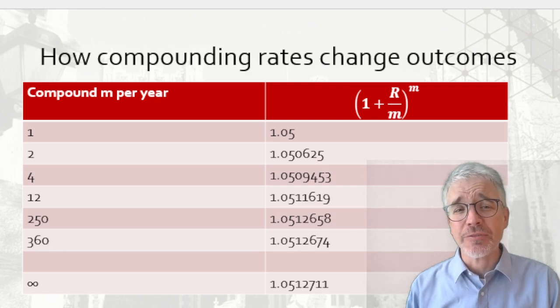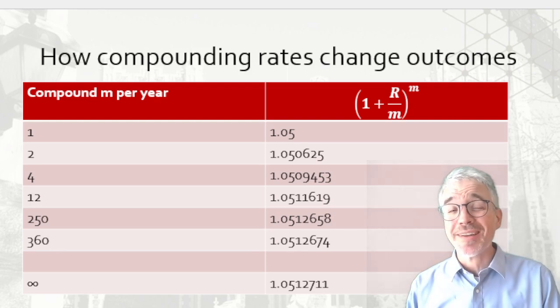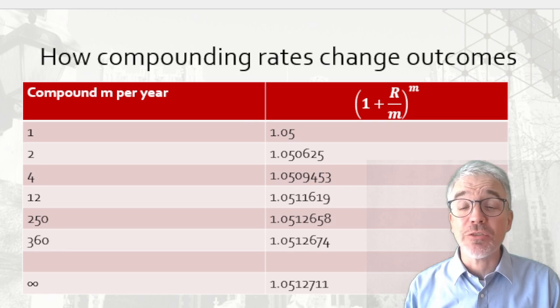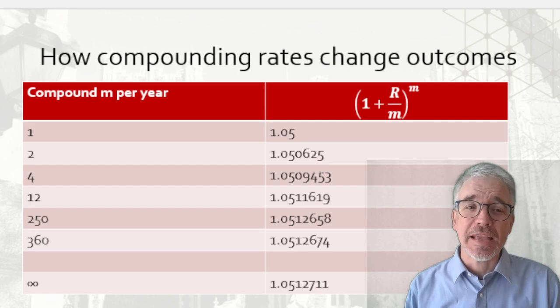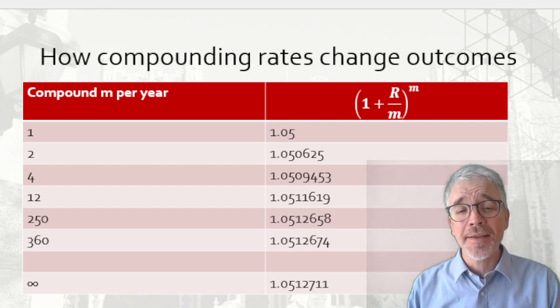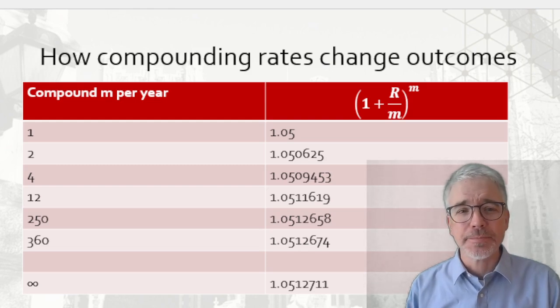If I compound twice, then after six months, I get 2.5%. And after the next six months, I get 2.5% of the original 2.5% as well on top. So I'm left with 1.050625. It's a little bit more. If I compound it four times, I get 1.05094. If I compound 12 times, or 250 times, or 360 times, I get a bit more. Now, why 360 not 365?